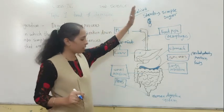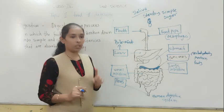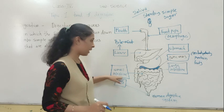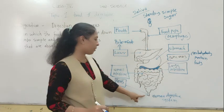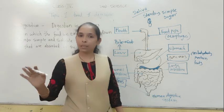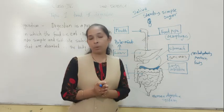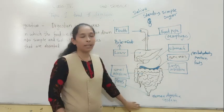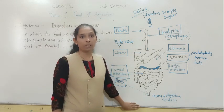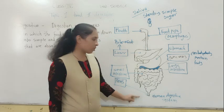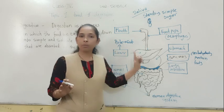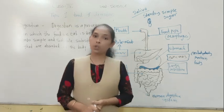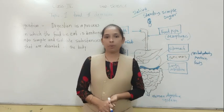So these are all the different organs of the digestive system: it starts from the mouth, then the food pipe, then the stomach, then the small intestine, then the large intestine, and with the help of the anus we throw out undigested food. You have to listen to the video properly, read your textbooks, and draw this diagram of the digestive system in your science notebook. That is your homework. We will meet in the next video with the next topic. Thank you.